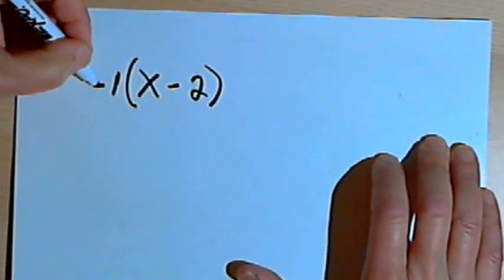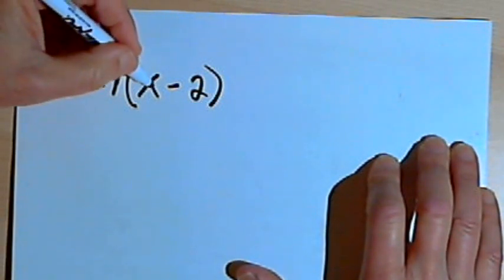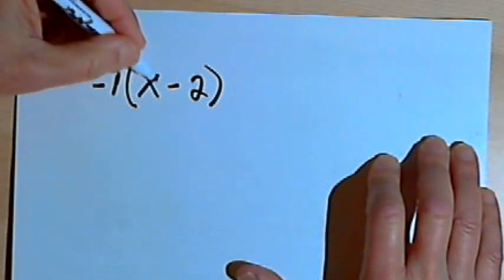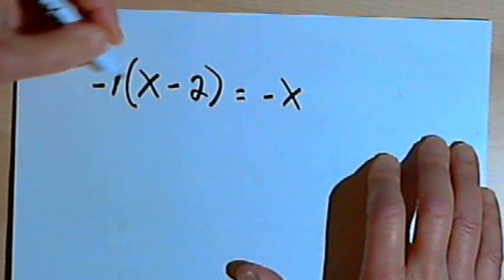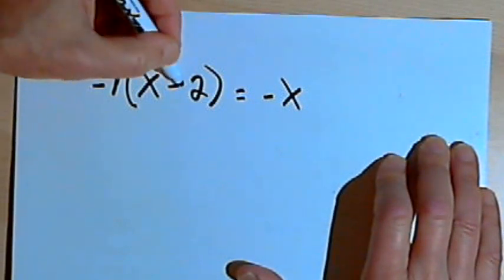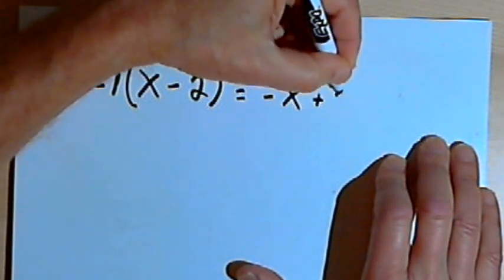So I'm going to distribute negative 1 across x minus 2. Negative 1 times x is negative x and negative 1 times negative 2 is positive 2.